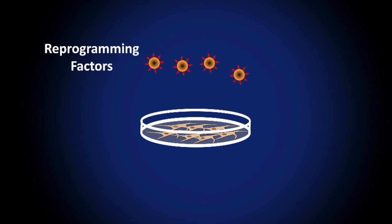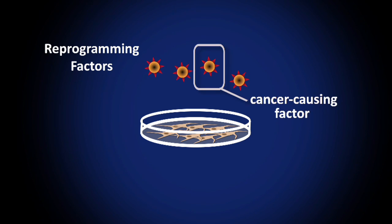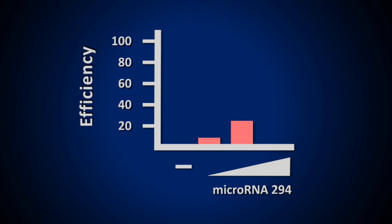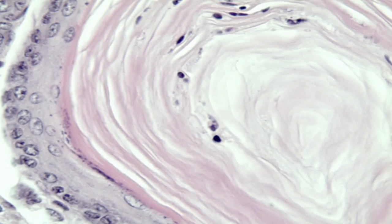What we found is that we can take out one of the major oncogenes - one of the major cancer-causing genes in the reprogramming assay - and replace it with this other small molecule called a microRNA. By doing this, we've not only increased the efficiency of the reprogramming assay, but we've decreased the number of side effects.